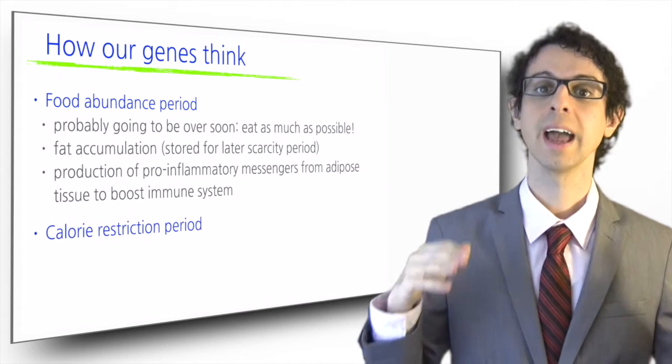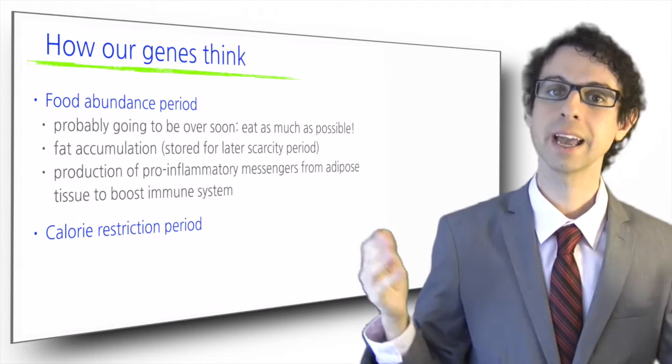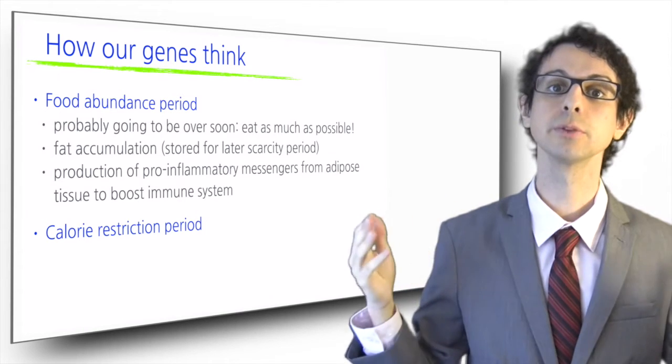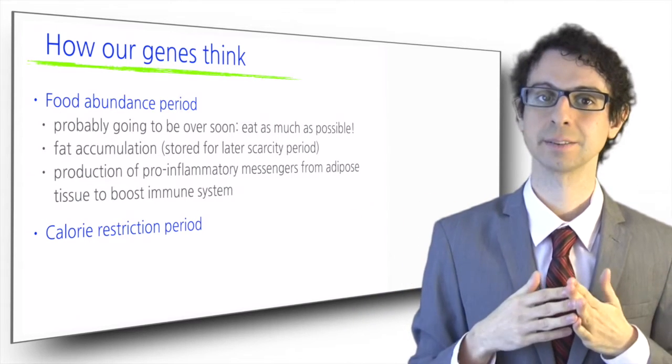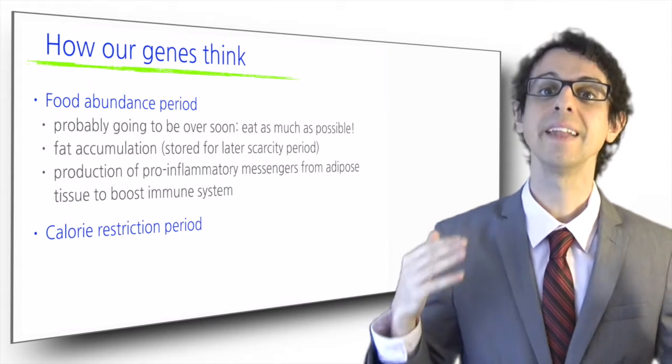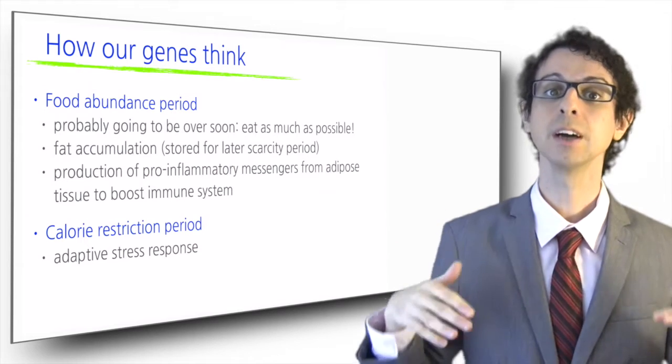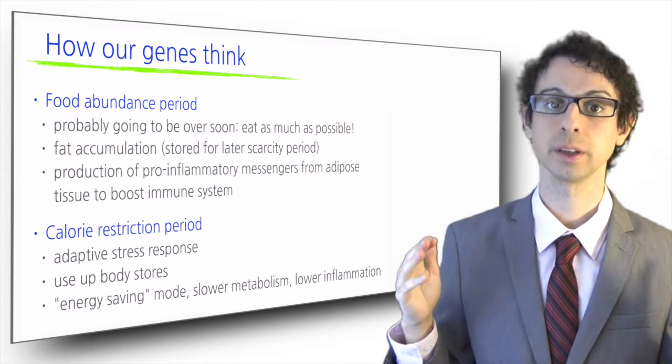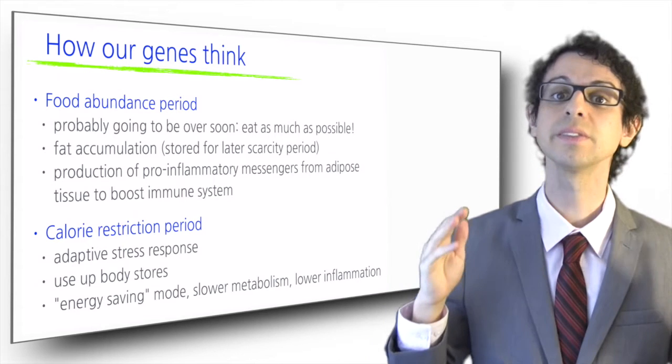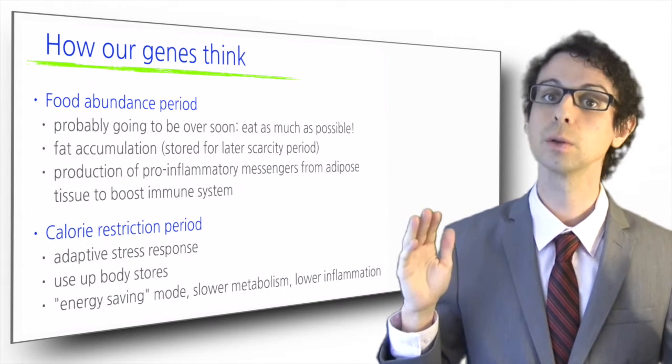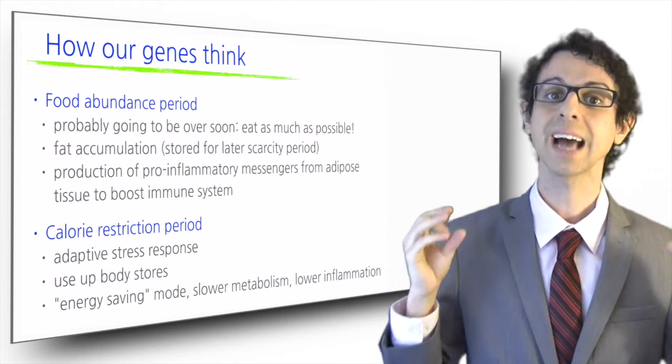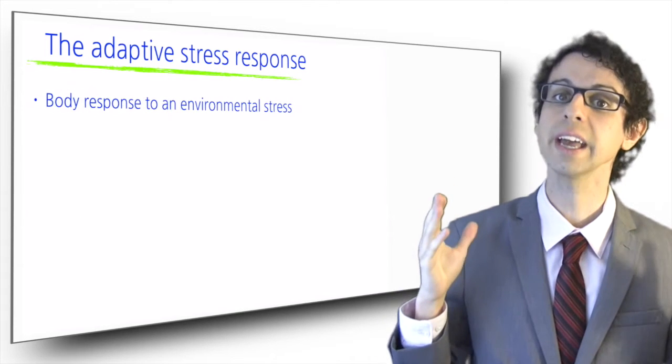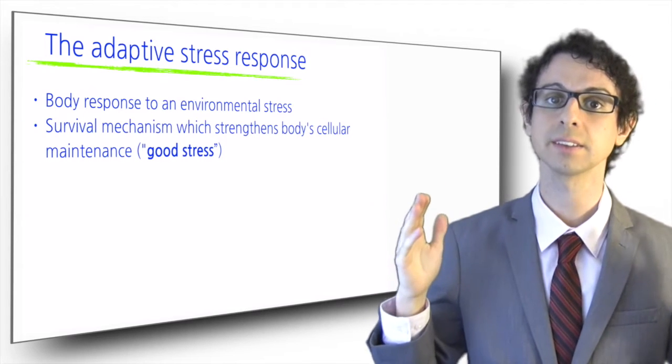Then, when the feast was over, a calorie restriction period would follow. The hunt today was not successful, and yet trying required a lot of physical activity. All that was eaten was probably some fruits and vegetables, roots, maybe a few insects. The energy balance was negative. More energy was spent than was provided by food. So it was time to use up that fat that was accumulated in the adipose tissue. The body now goes in energy saving mode. Metabolism slows down, and those inflammatory mediators secreted by the extra adipose tissue are no longer produced. At the same time, the adaptive stress response is activated. This body response to a physical environmental stress was actually a good thing, a survival mechanism which strengthened the body's cellular maintenance.